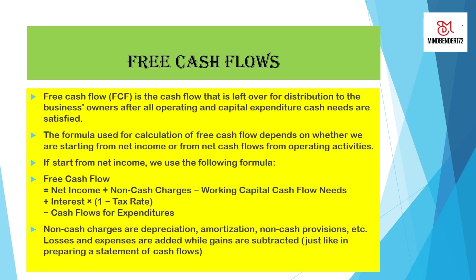The first method is the net income method. Free cash flows from net income are calculated by: starting with net income, adding non-cash charges, minus working capital cash flow needs, plus interest adjusted for tax, minus any cash flows for capital expenditures. Non-cash charges here are depreciation and amortization, which are not actually expenses but adjustments.